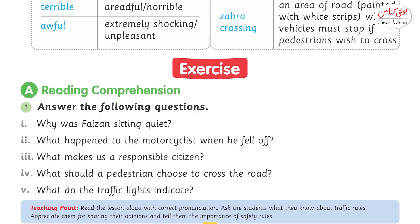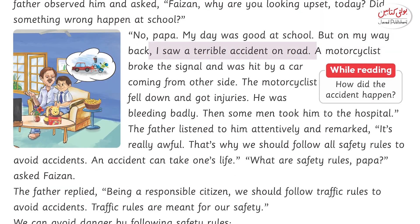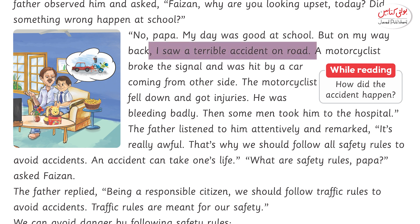Section A, reading comprehension questions. Question number one: why was Faizan sitting quiet? The answer is Faizan was sitting quiet because he had seen a terrible accident.